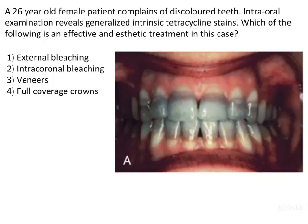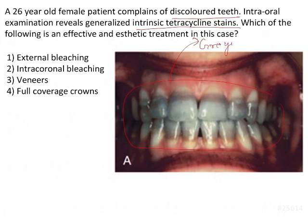A 26-year-old female patient complains of discolored teeth. Total examination reveals generalized intrinsic tetracycline stain. We can see there is grayish pigment that is very much visible on the teeth. These are basically tetracycline stains and although most of the crown is grayish, you will further see darker bands here that are grayish brown in nature.